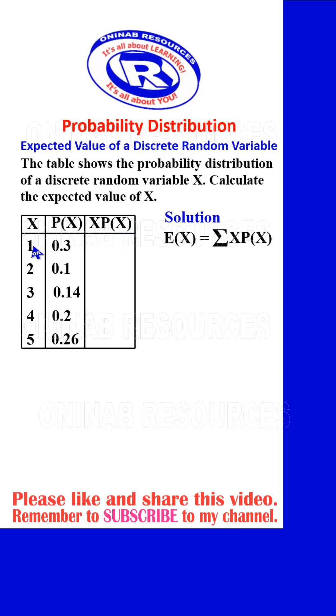So we start the multiplication. 1 times 0.3 gives 0.3. 2 times 0.1 gives 0.2. 3 times 0.14 gives 0.42. 4 times 0.2 gives 0.8. And 5 times 0.26 gives 1.3.